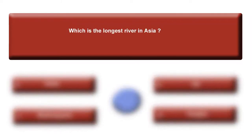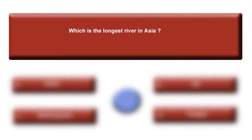Which is the longest river in Asia? Easy question. Your options are: option A, Indus; option B, Ob; option C, Brahmaputra; or option D, Yangtze. Time is up. Answer is D, Yangtze.